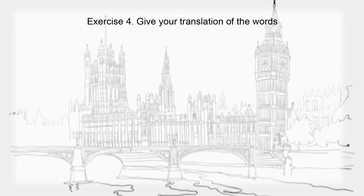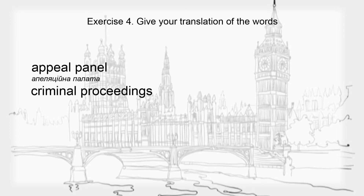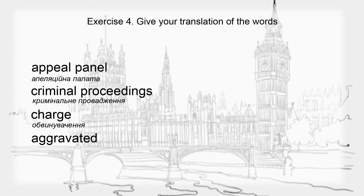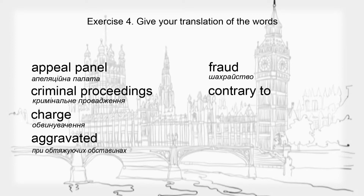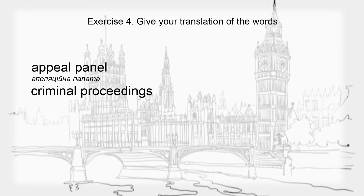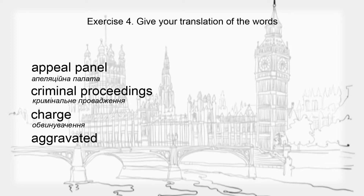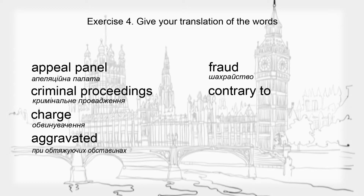Give your translation of the words: Appeal panel, Criminal proceedings, Charge, Aggravated, Fraud, Contrary to, Remainder. Appeal panel, Criminal proceedings, Charge, Aggravated, Fraud, Contrary to, Remainder.